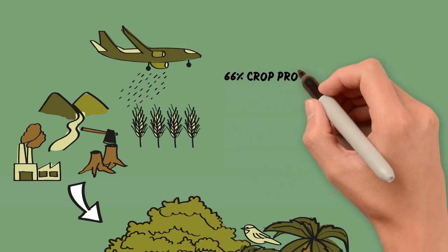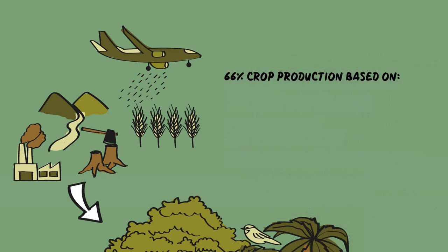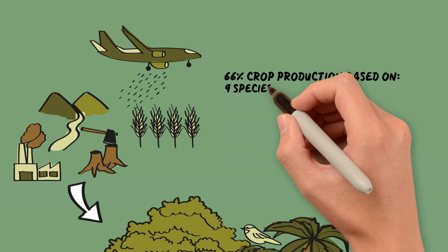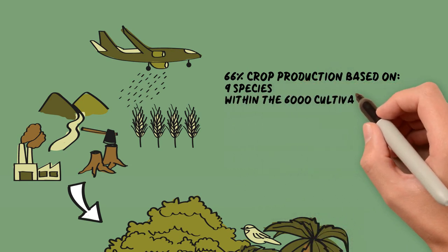Today, for example, 66% of the world crop production is based only on 9 plant species, within the 6,000 cultivated for this purpose.